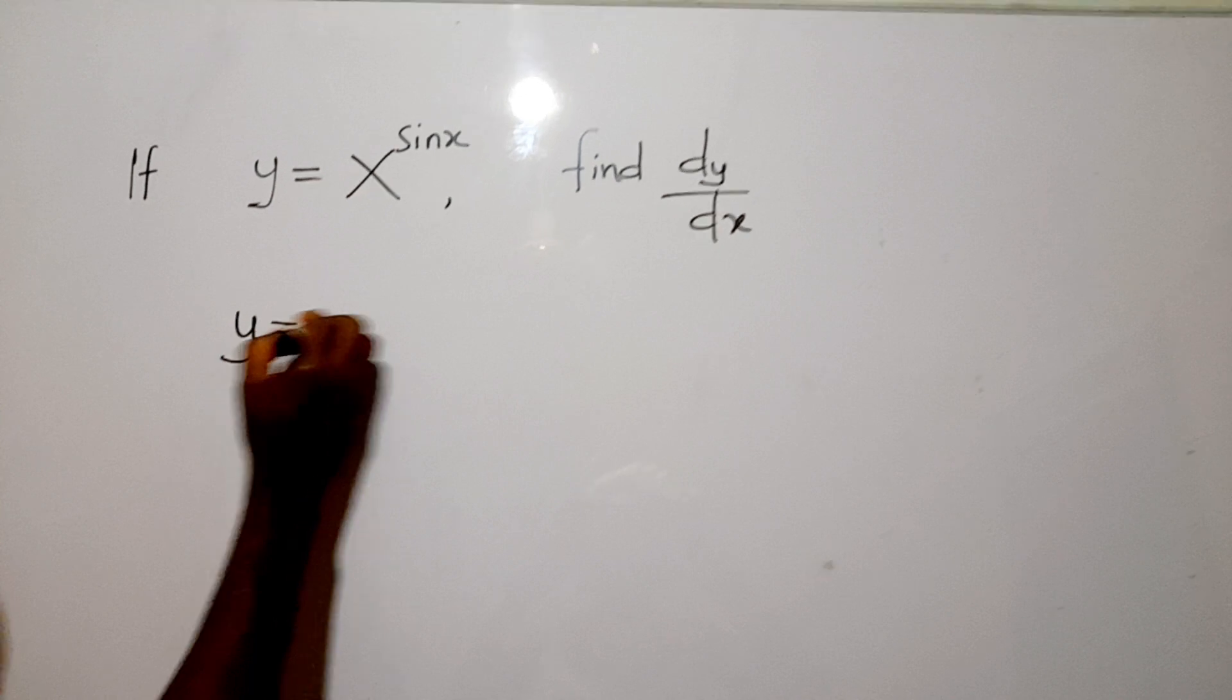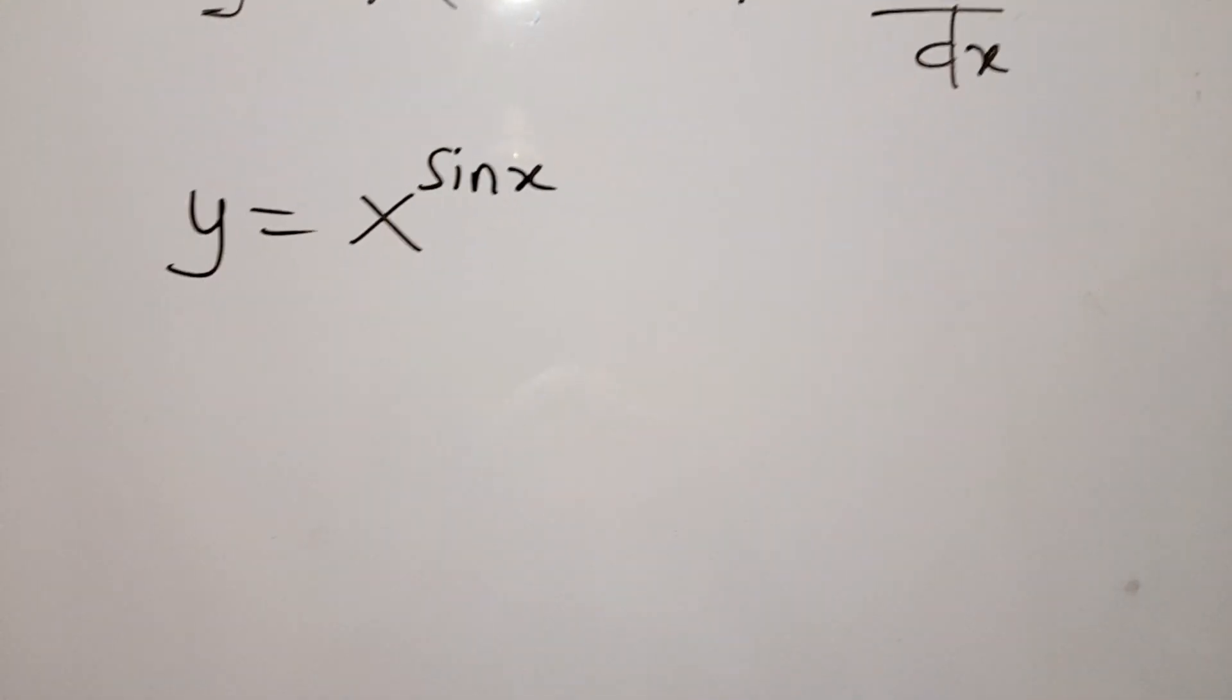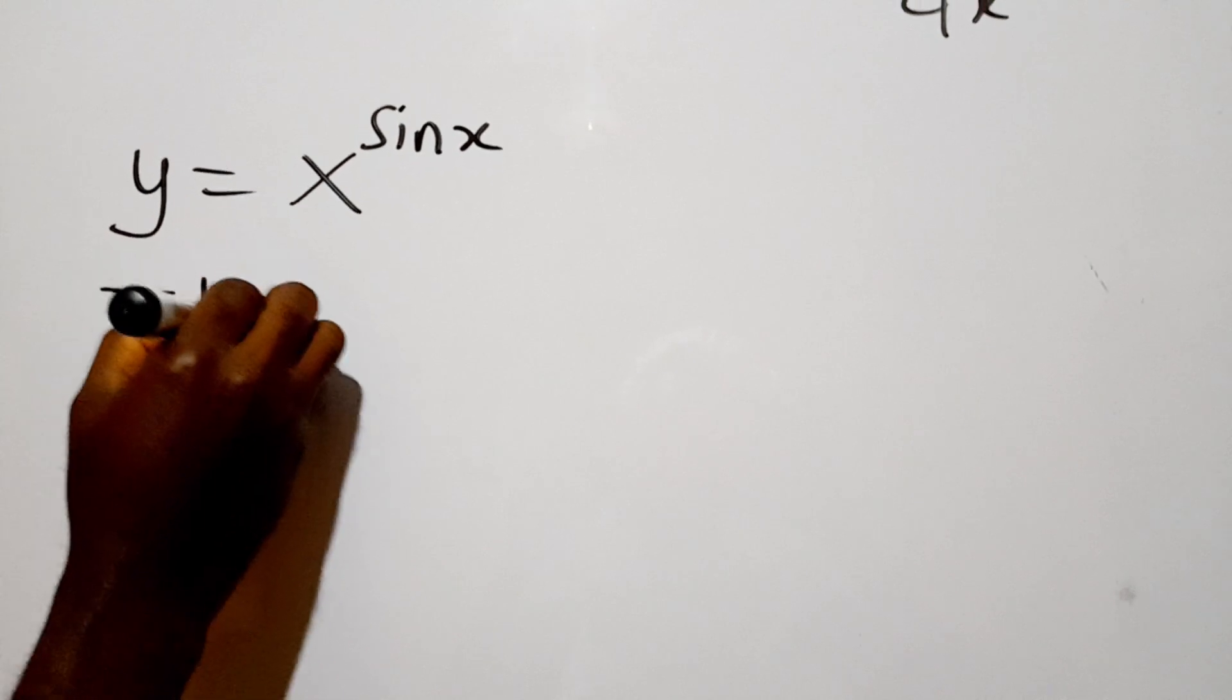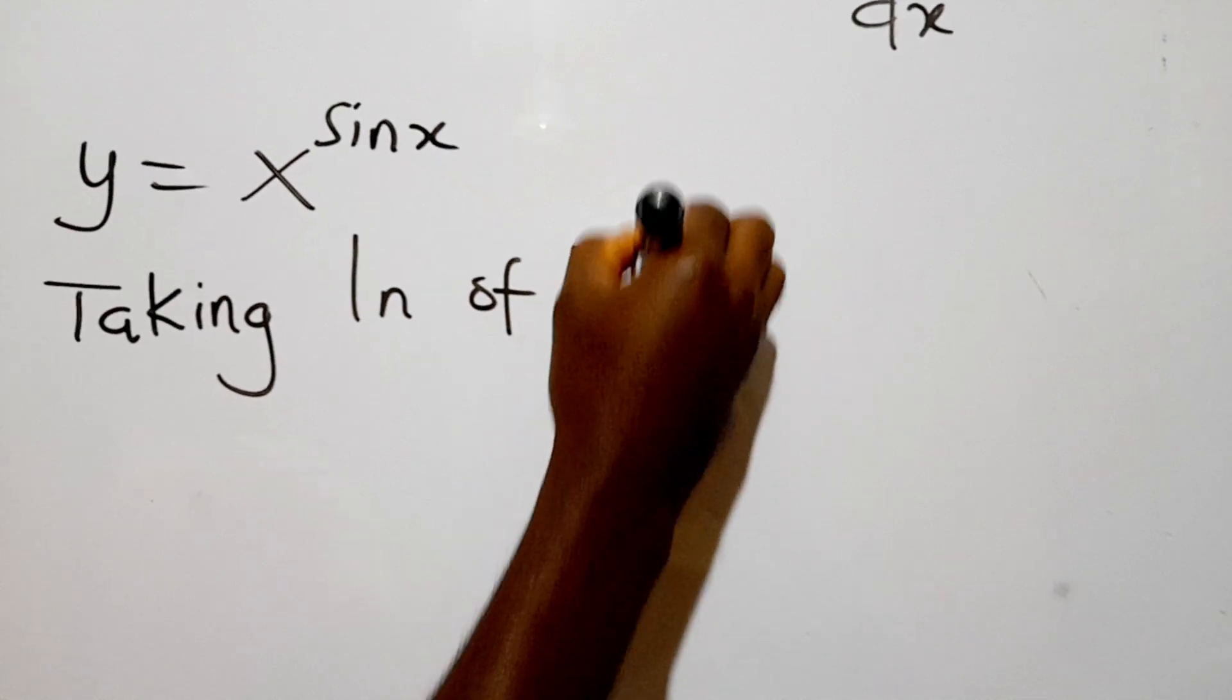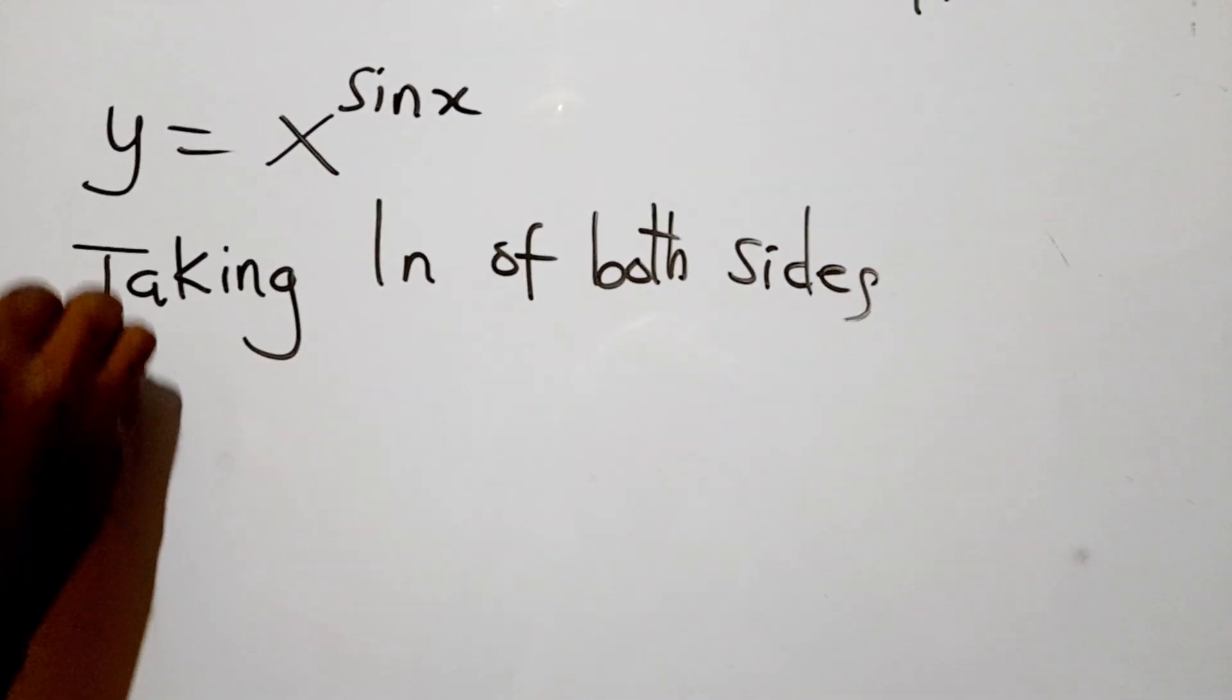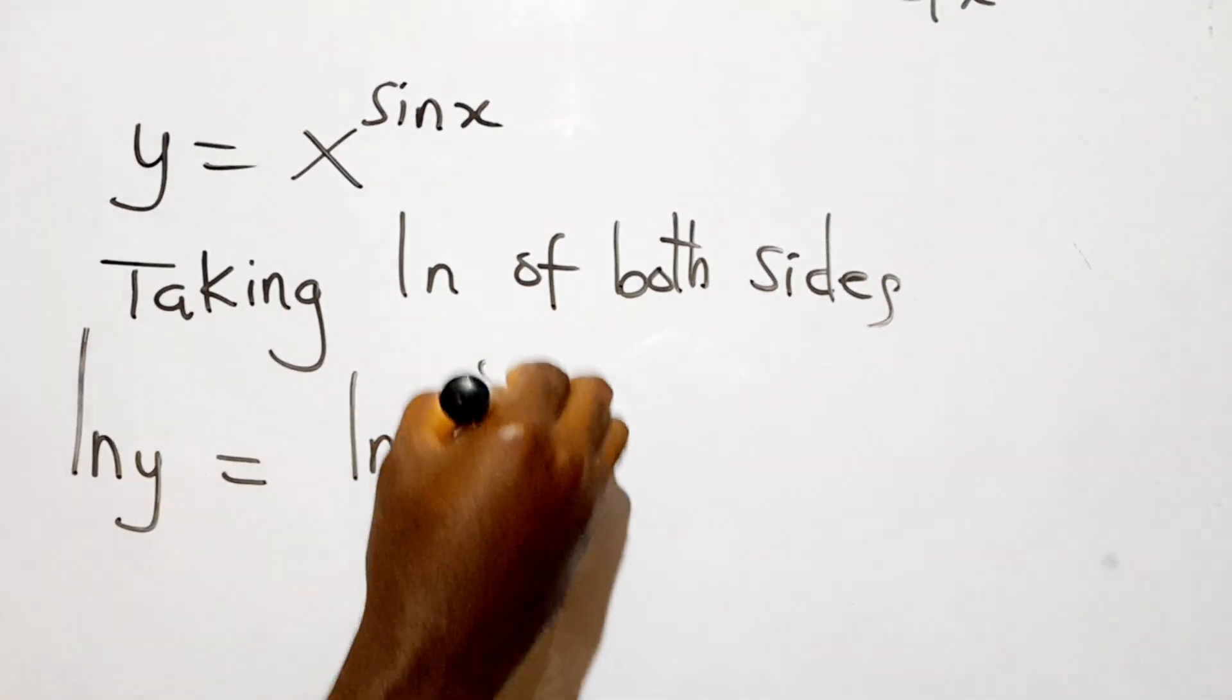So if y = x^(sin x), we need to take ln of both sides. That's the natural log of both sides. So taking ln of both sides, we can say ln y = ln(x^(sin x)).